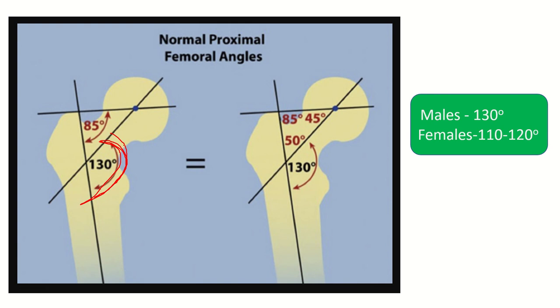So here the angle - it is 130 degrees in case of males, and in case of females it is 110 to 120 degrees. And we can see another angle that lies between the femoral neck and the greater trochanter - this is 85 degrees. It is usually not required or most important here.